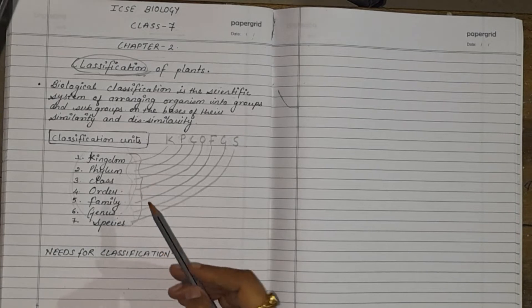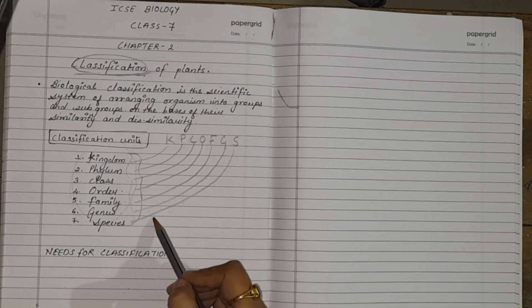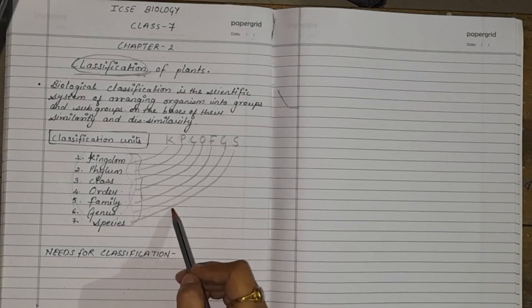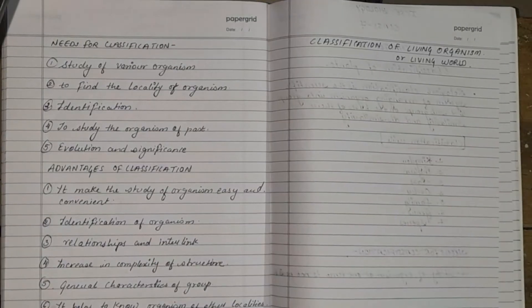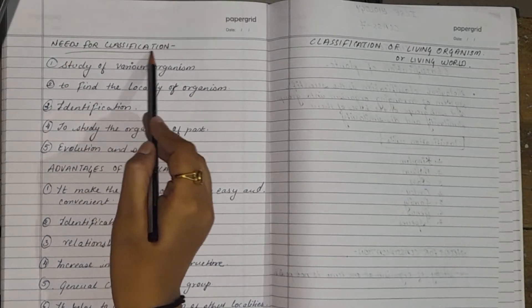To identify and describe different kind of organism, to place the organism in various categories on their basis of similarities and dissimilarities, build a true natural system of classification gives an idea of origin and evolution. So the next topic in this chapter is needs for classification.